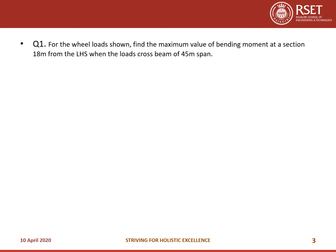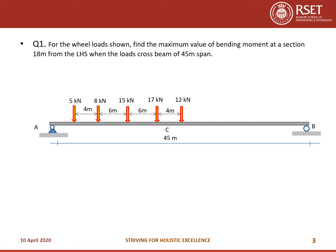Consider a question for the wheel loads shown. Find the maximum value of bending moment at a section 18 meters from the left-hand side when the load crosses the beam of 45-meter span. The total span of the beam is 45 meters and the section is at 18 meters from the left-hand support.